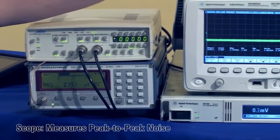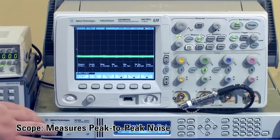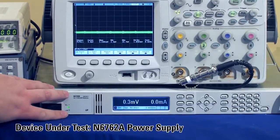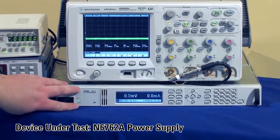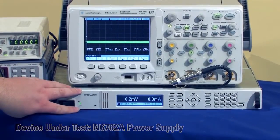We also have a scope that we're going to use to measure the peak-to-peak voltage noise, and our N6700B mainframe with the N6762A module in channel 1 that we're going to use as the device we're testing.